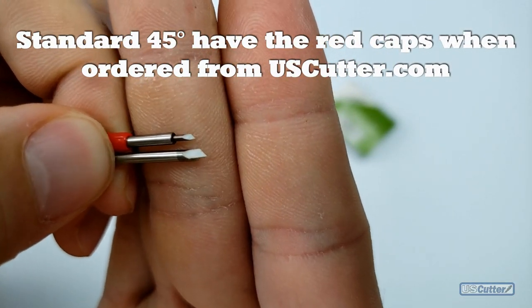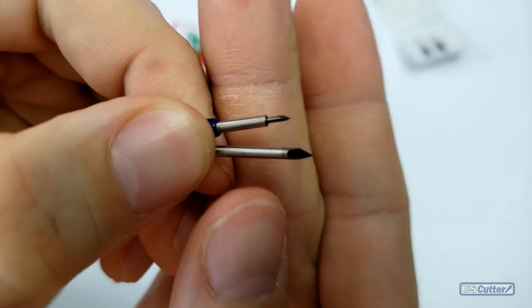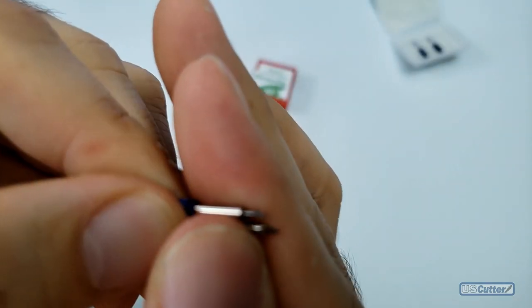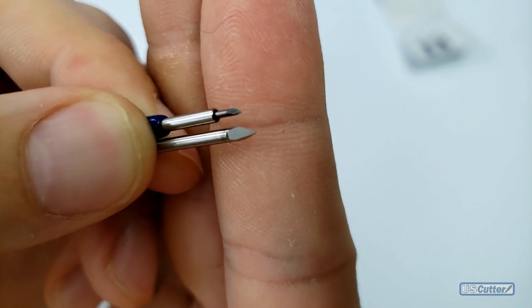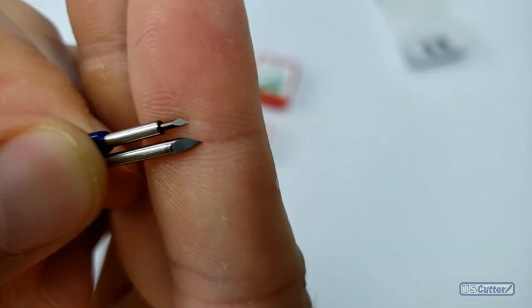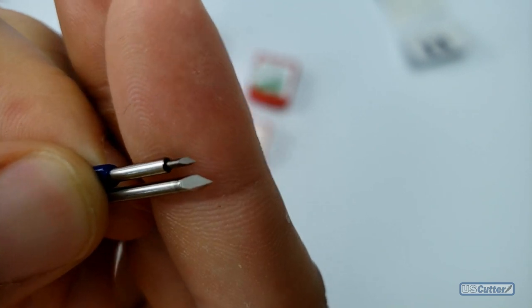Anything thicker than that like strip flock, glitter heat transfer vinyl, or sandblast mask, I personally will switch over to a 60 degree blade. The 60 degree blade penetrates the deepest and should only be used for your thicker materials like I just mentioned. I also like to use this 60 degree blade when I'm cutting smaller or more detailed images.